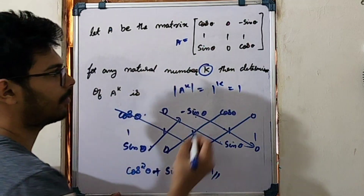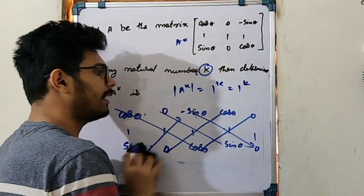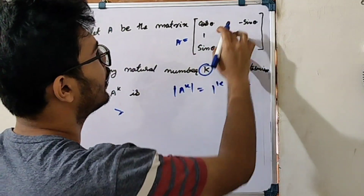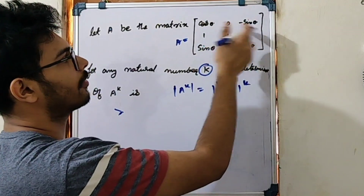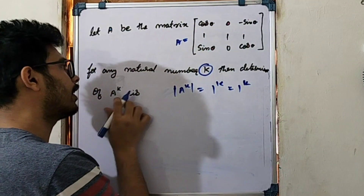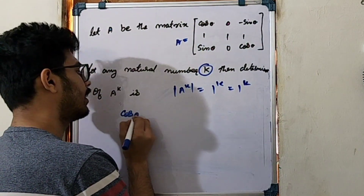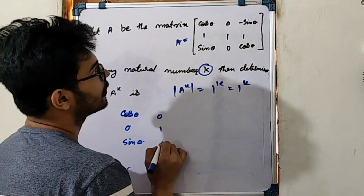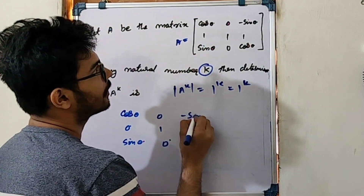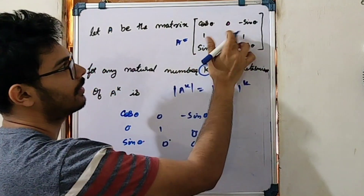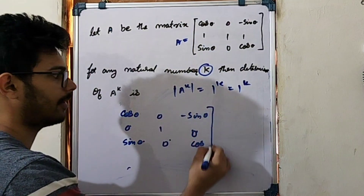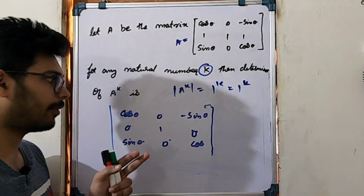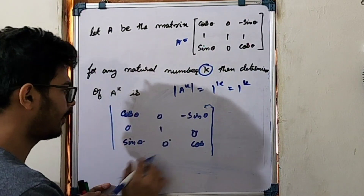You get the determinant of A to the k. One of the squared values is 1. The matrix becomes: cos theta, 0, sin theta; 0, 1, 0; minus sin theta, 0, cos theta. We apply elementary row operations. We have row interchange, so the determinant of Y is negative y. After interchange: 0, 1, 0; cos theta, 0, minus sin theta; sin theta, 0, cos theta.